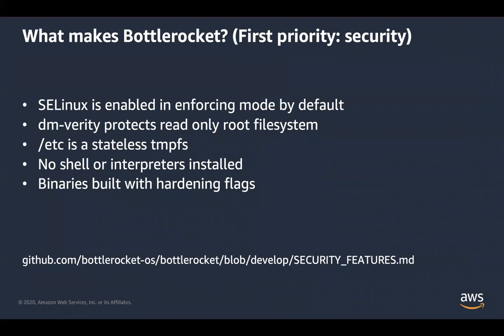One of the first areas to talk about with BottleRocket is security. Everything we build at AWS is security-first, and we wanted to build an OS that focused on that as well. We built it with SELinux enabled in enforcing mode by default. The goal of the SELinux policy is to separate the containers running on the host from the underlying OS itself. If you need to elevate permissions for certain workloads, there are ways to do that, but by default we ensure those workloads are as separated as possible for safety and security.